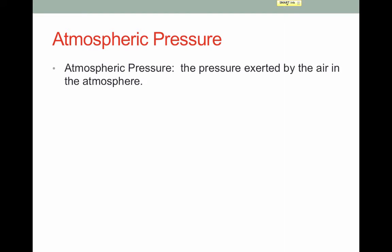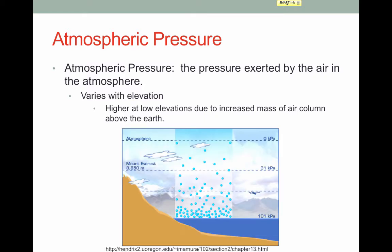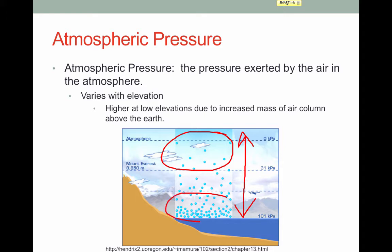Atmospheric pressure is the pressure exerted by the air in the atmosphere, and we'll be taking this into account in many labs this year. Atmospheric pressure varies with elevation. If you go to a higher elevation, the atmospheric pressure is significantly lower due to the fact that you have literally less air above you — the mass of the air column above you is smaller. As shown in the diagram, as you go higher up in elevation, the number of gas particles decreases, and therefore the atmospheric pressure is less. Closer to sea level, you have more gas particles, which causes a higher atmospheric pressure.